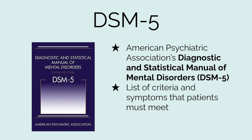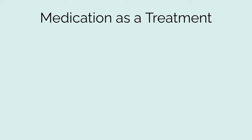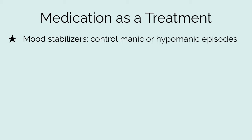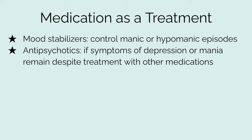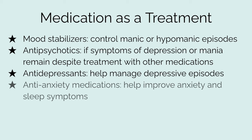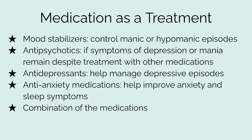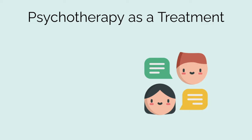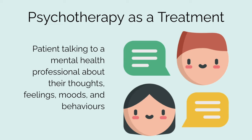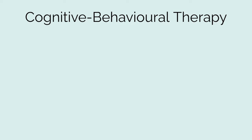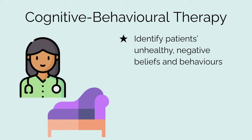For people diagnosed with bipolar disorder, there are many treatment options available. One option is medication, including mood stabilizers to control manic or hypomanic episodes, antipsychotics if symptoms remain despite other treatments, antidepressants to help manage depressive episodes, anti-anxiety medications to help improve anxiety and sleep symptoms, or a combination of the above. Another popular option is psychotherapy, also known as talk therapy, which involves the patient talking to a mental health professional about their thoughts, feelings, moods, and behaviors. One type is cognitive behavioral therapy, which involves identifying unhealthy negative beliefs and behaviors and replacing them with healthy positive ones.